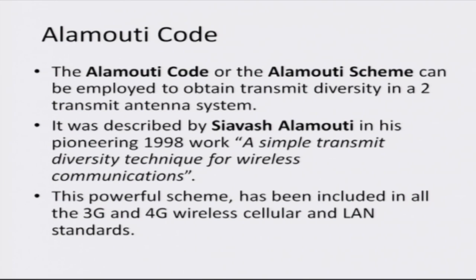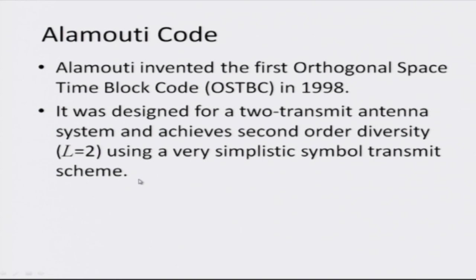Another advanced feature of 3G and 4G wireless systems is what is known as space-time block coding — coding across the space and time dimensions. This technique was pioneered by Siavash Alamouti in a paper titled 'A Simple Transmit Diversity Technique for Wireless Communications,' proposed around 1998. This is a revolutionary scheme which significantly enhances the reliability of bit transmission over the wireless link. It is known as orthogonal space-time block codes, originally proposed for two antennas by Alamouti and later extended to other systems.